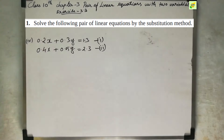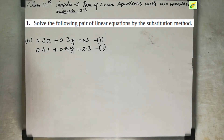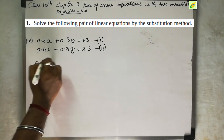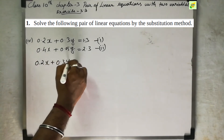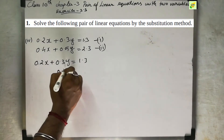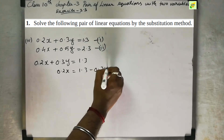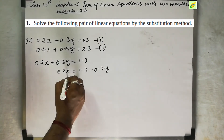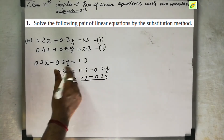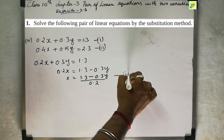Next sum — we will do the first sum of the 4th subdivision. We have the first equation and the second equation. The first equation is 0.2x plus 0.3y equal to 1.3.